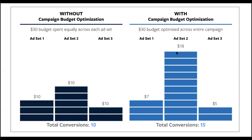We have to do the ad set, and this is going to be optimized. The two numbers in the ad group — we have to do conversion, total conversion: 1, 2, 3, 4, 5, 6, 7, 8, 9, 10. You will give the budget to the ad set — $80. This is the automatic Facebook optimization.